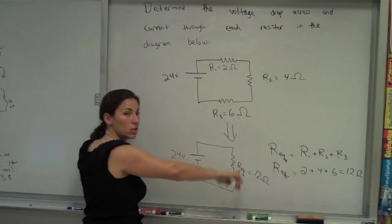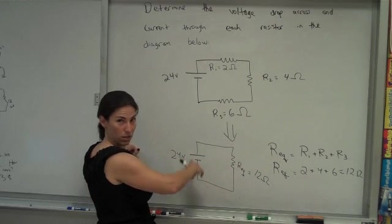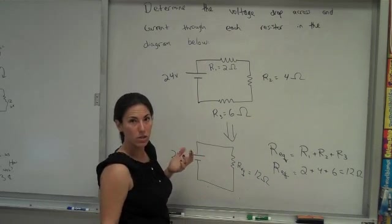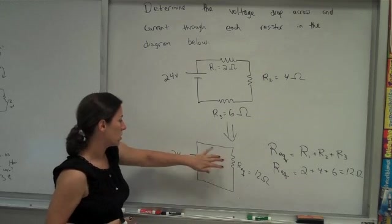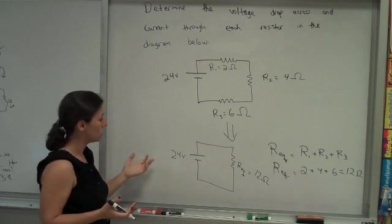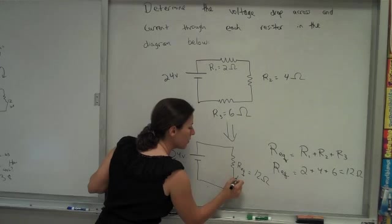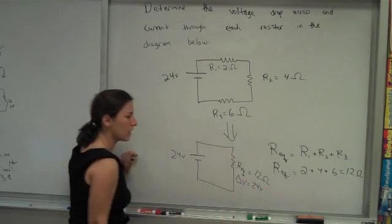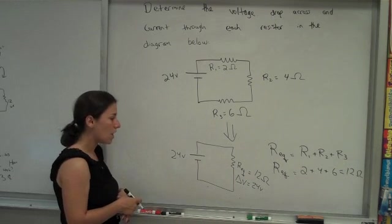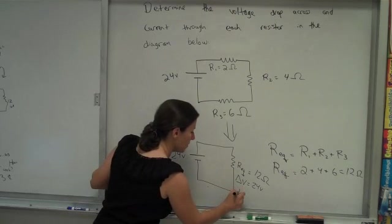So in this case the current is the same in this imaginary circuit as it is in the real circuit. And so now at this point there's only one resistor, there's only one voltage source, so the voltage drop across this is 24 volts. And so now you can use Ohm's law and solve for how much the current is going to be.